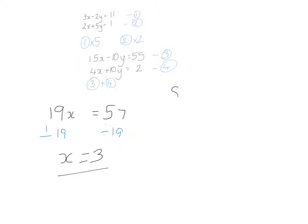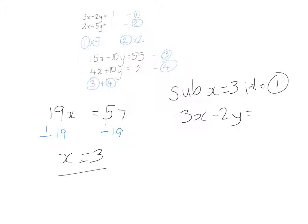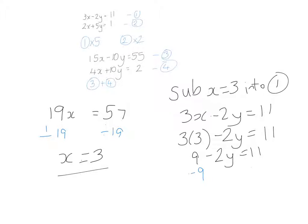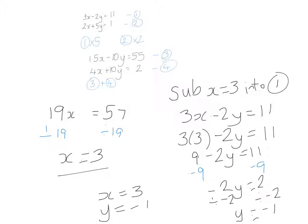Now I substitute x equals 3 into equation one: 3x minus 2y equals 11. So 3 times 3 take away 2y equals 11, giving 9 take away 2y equals 11. Subtracting 9 from both sides: minus 2y equals 2. Dividing both sides by minus 2 gives y equals minus 1. So the solution to this pair of equations is x equals 3, y equals minus 1.